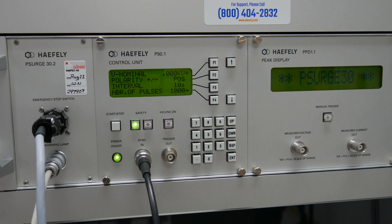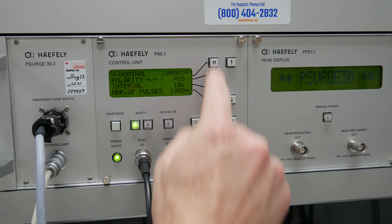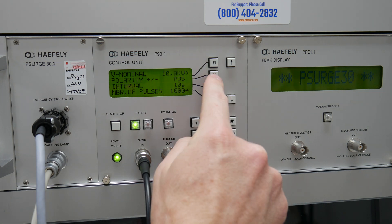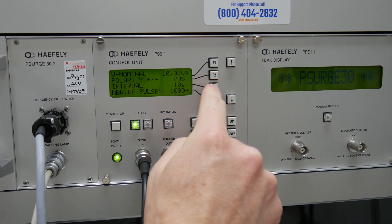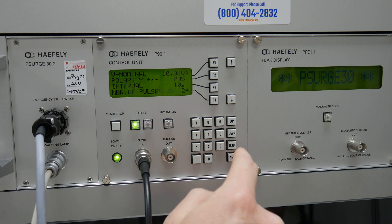On the main screen of the P-Surge 30 generator we can set our nominal voltage. For this test we will do a 10 kV surge with positive polarity. The pulse is repeating every 10 seconds. I'm just going to do two pulses for now.